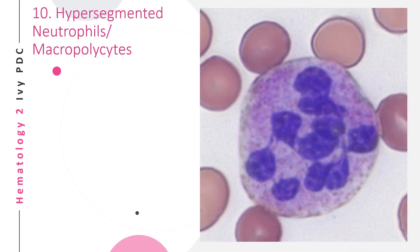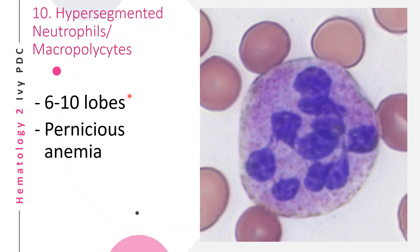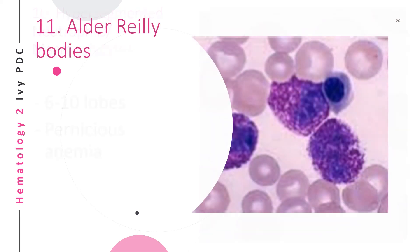In hypersegmented neutrophils, also known as macropolycytes, the neutrophil has six to ten lobes. In this picture, the neutrophil has ten lobes, making it a hypersegmented neutrophil. This type is usually seen in cases of pernicious anemia.